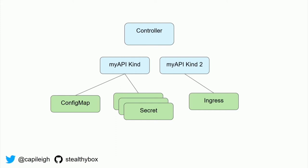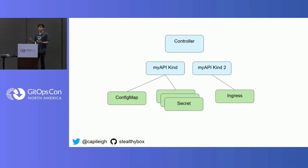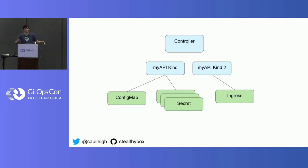Lots of things need secrets so they can get credentials to access external APIs and control things. My second kind might mutate ingresses or whatever. So I have my use cases in mind, I make my API, I write my controller code, and that controller needs a service account. That service account needs a role binding to a role that lists a bunch of these kinds of things. It's a non-trivial problem, but at least it's well understood, because when we come to writing our controller, we know what we're working on.